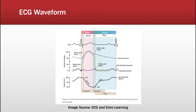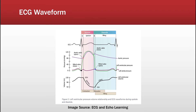The ECG is ultimately affected as well. With a smaller stroke volume, the ejection and relaxation portions of the ECG are shorter, which leads to smaller P and T waves. With the heart working harder to contract, the QRS complex would appear greater as well.